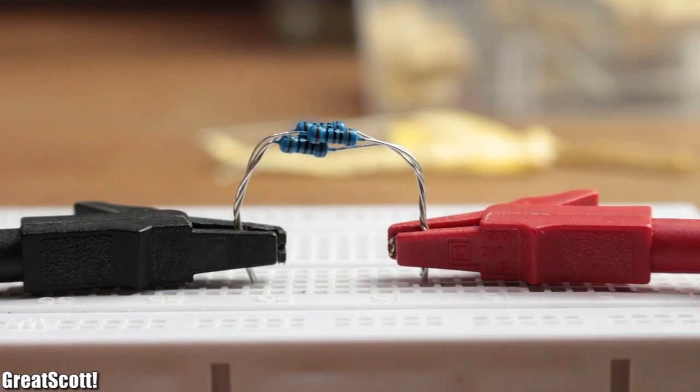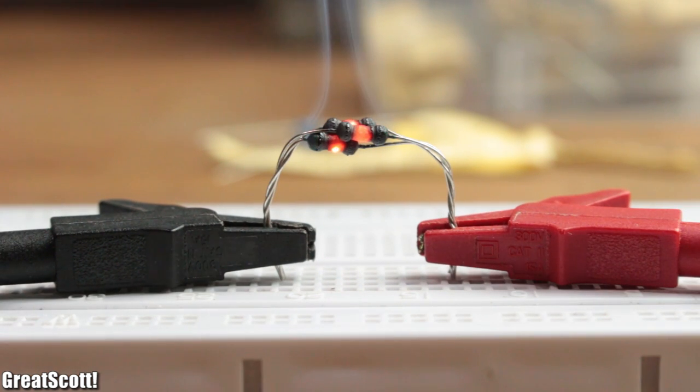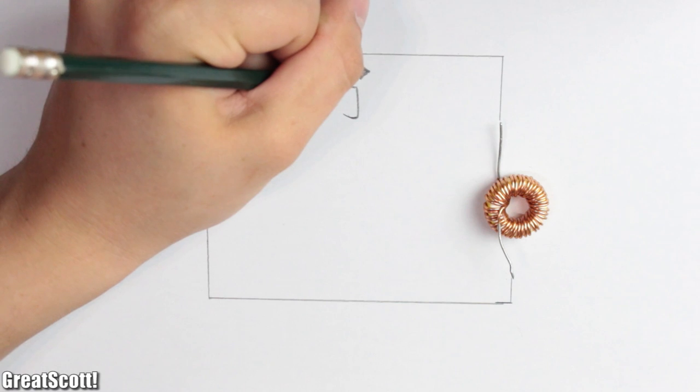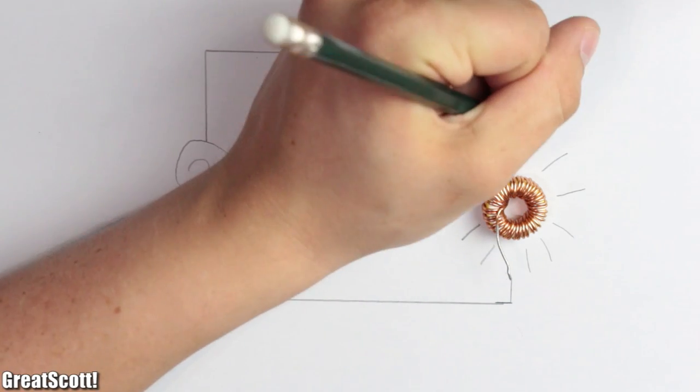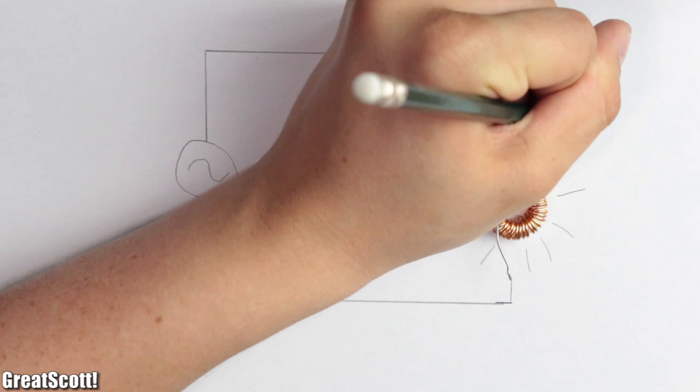This time power does not get converted into heat like normal resistors would do, but in a magnetic field which builds up and collapses. Watch part 1 if you didn't know that yet.